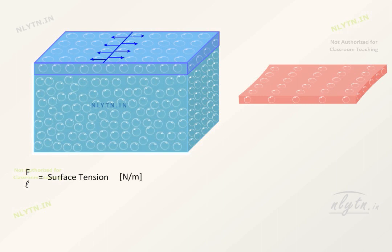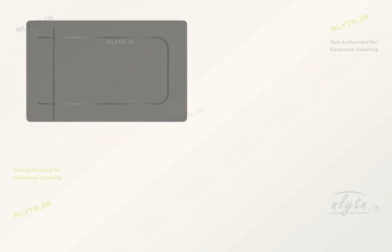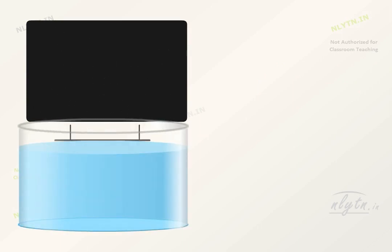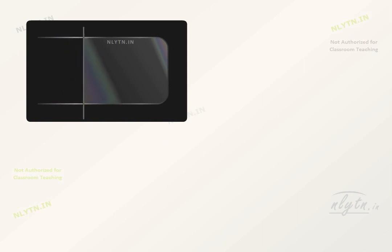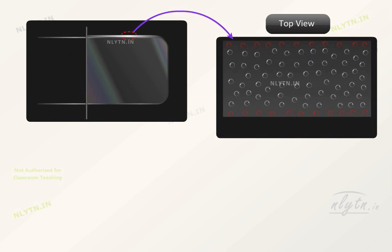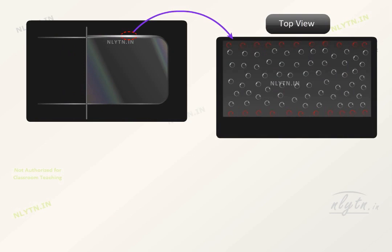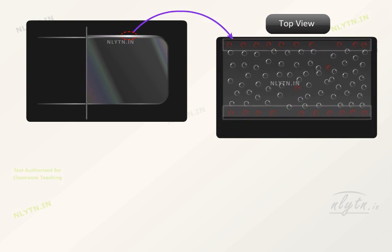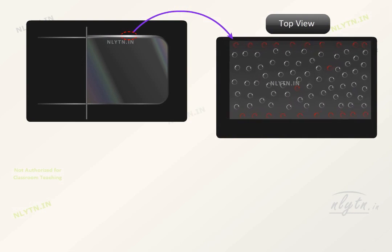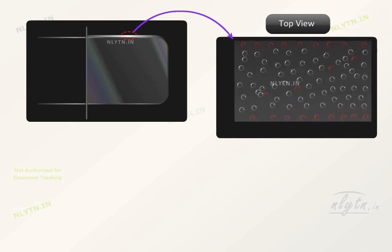Because the surface of a fluid is stretched, it tries to reduce the surface area of the fluid. Let us take an example of a frame where one side of the frame can slide freely. If we dip this frame in a soap solution, then we will see that this wire slides such that the area of the surface is reduced. This happens because the molecules on the surface of the fluid tend to go inside the bulk, which puts the surface in a stretched state causing it to reduce the surface area and thus causing the wire to slide.